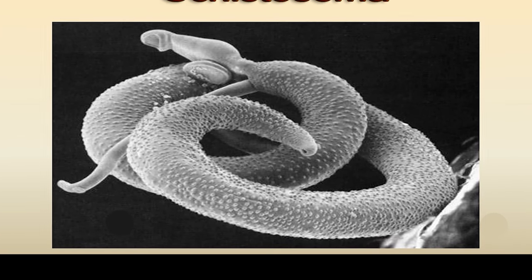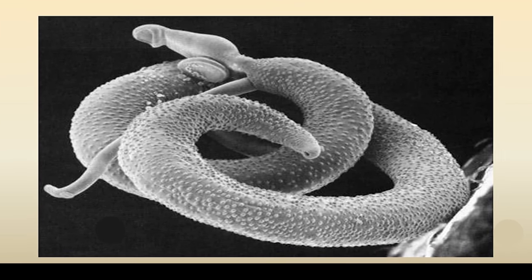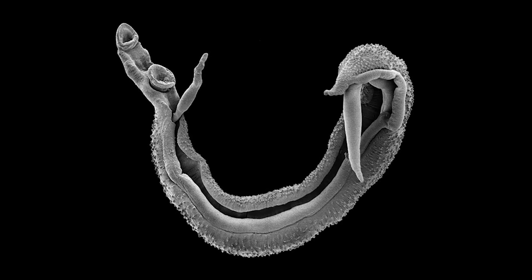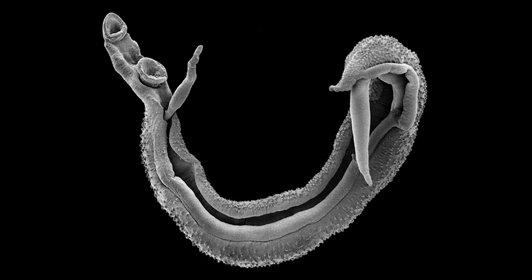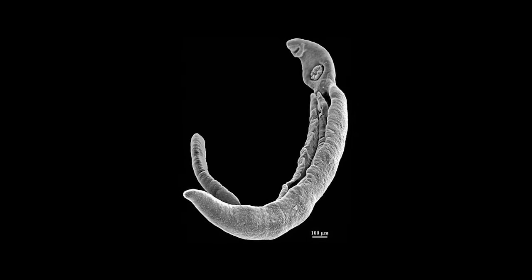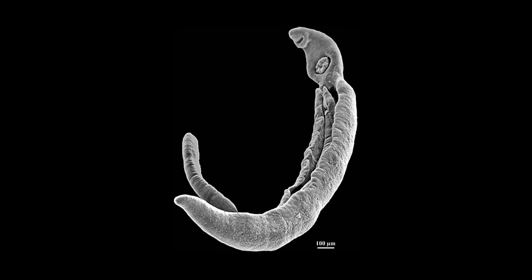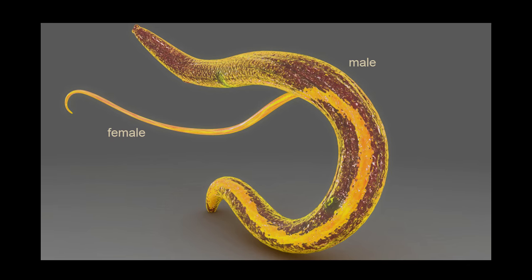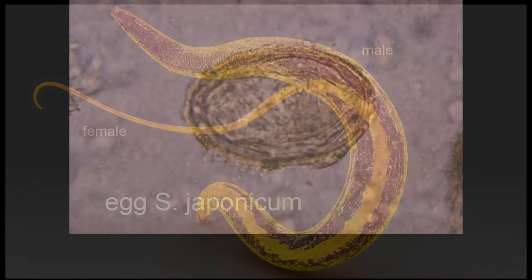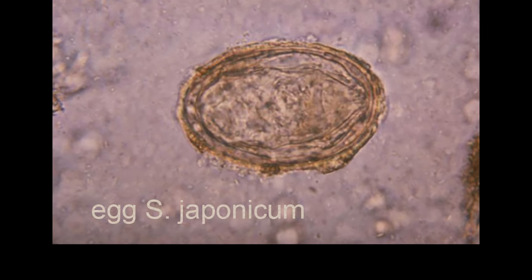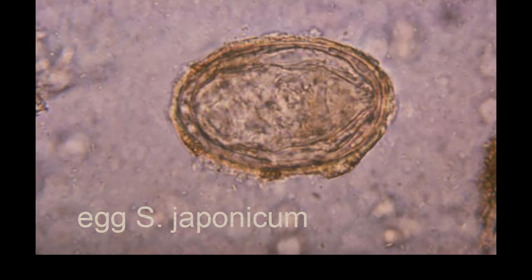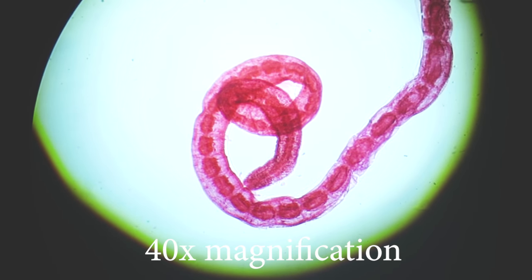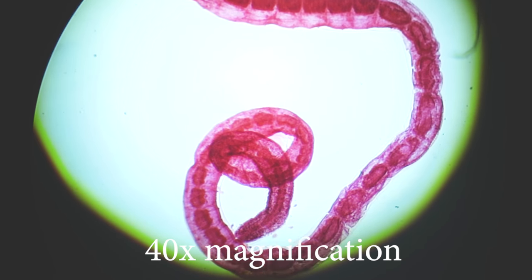Schistosoma is a genus of trematodes, commonly known as blood flukes. They are parasitic flatworms responsible for a highly significant group of infections in humans termed schistosomiasis, which is considered by the World Health Organization as the second most socio-economically devastating parasitic disease after malaria, with hundreds of millions infected worldwide.